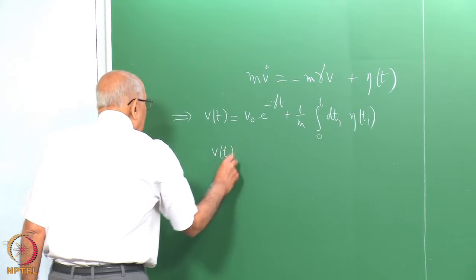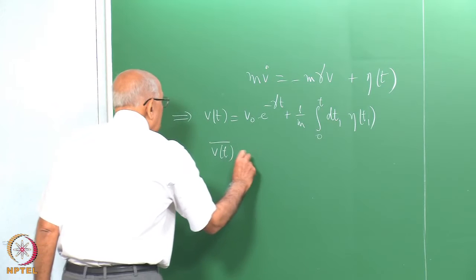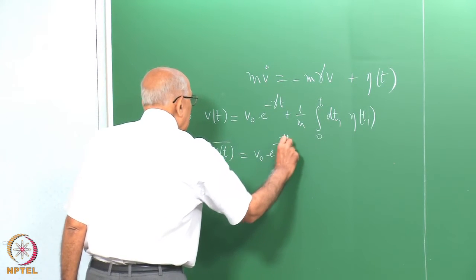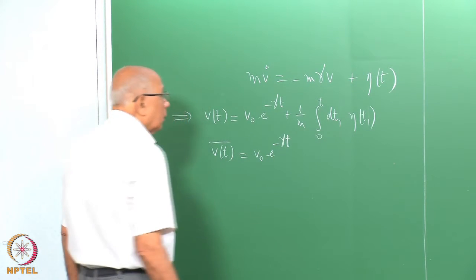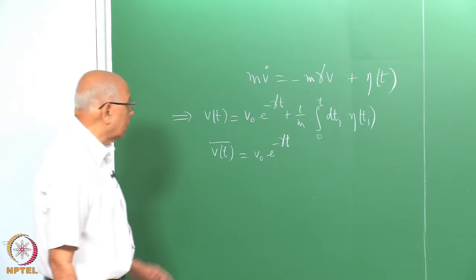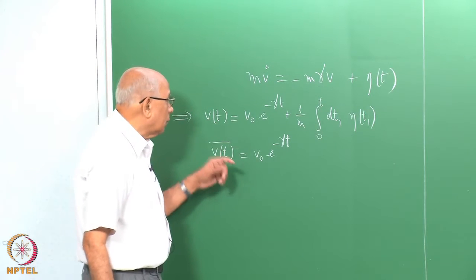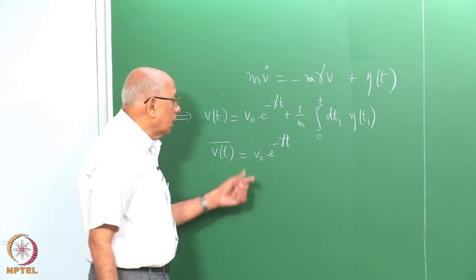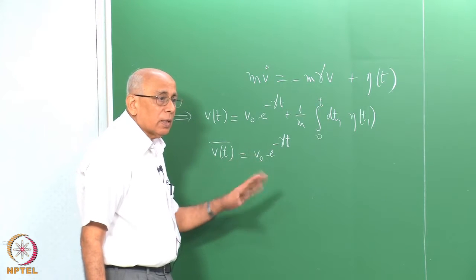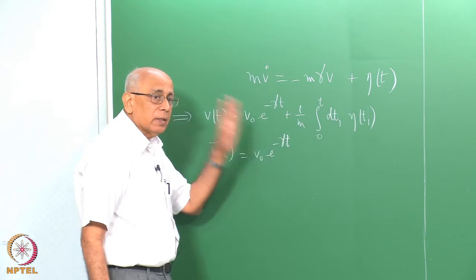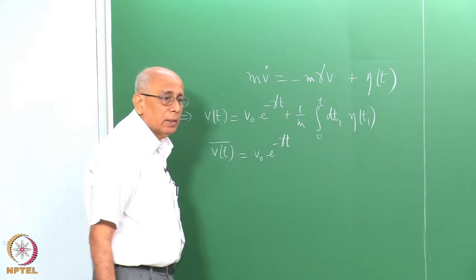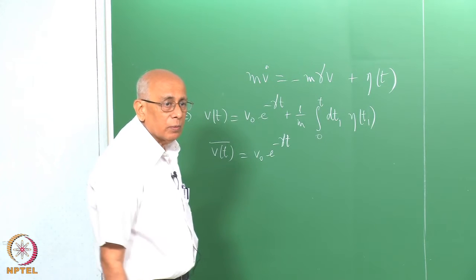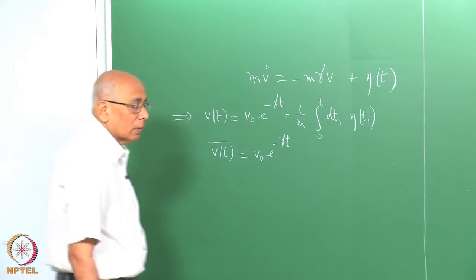The average of v of t was v-naught e to the minus gamma t, which was very good because it says that if you wait long enough after the initial instant, the conditional mean does indeed vanish, as the equilibrium mean already vanishes.